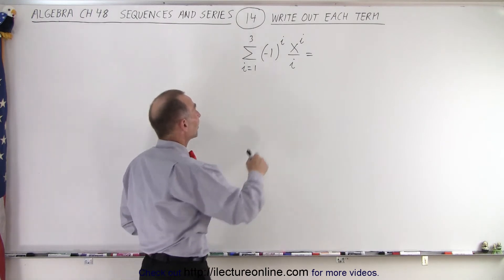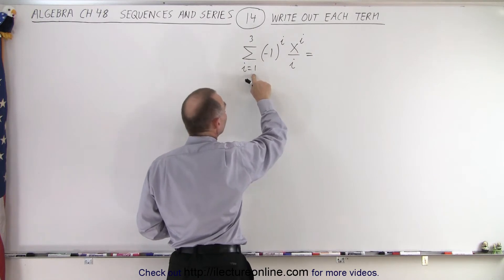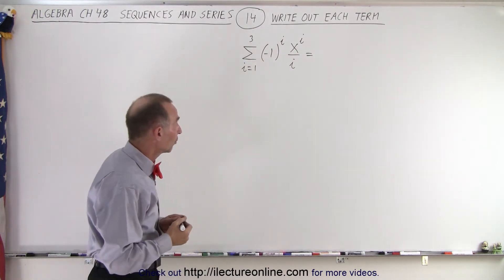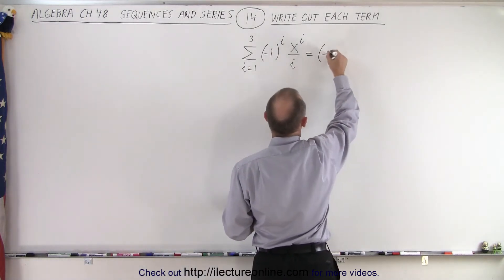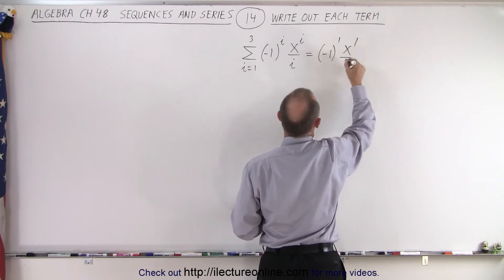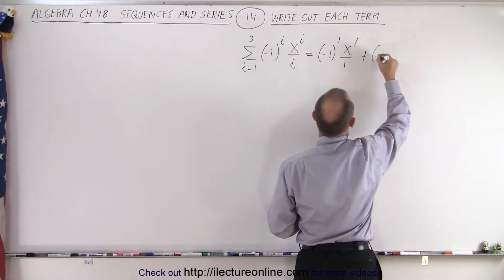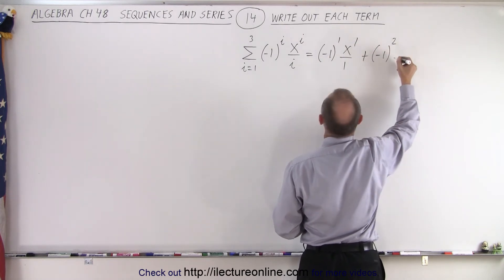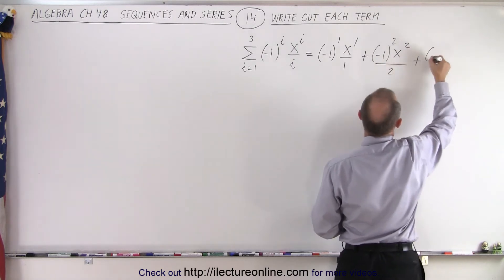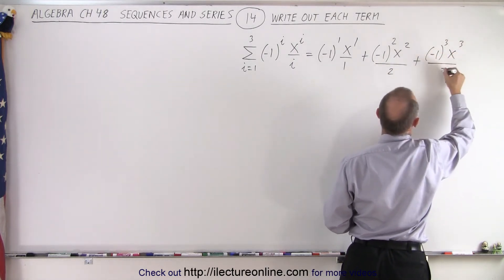In each case we're going to replace every i — there are three of them — by first the number one, then the number two, and the number three. So for the first term this becomes the quantity negative one raised to the first power times x to the first power divided by one, plus the second term: negative one raised to the second power times x to the second power divided by two, and finally plus negative one to the third power times x to the third power divided by three.